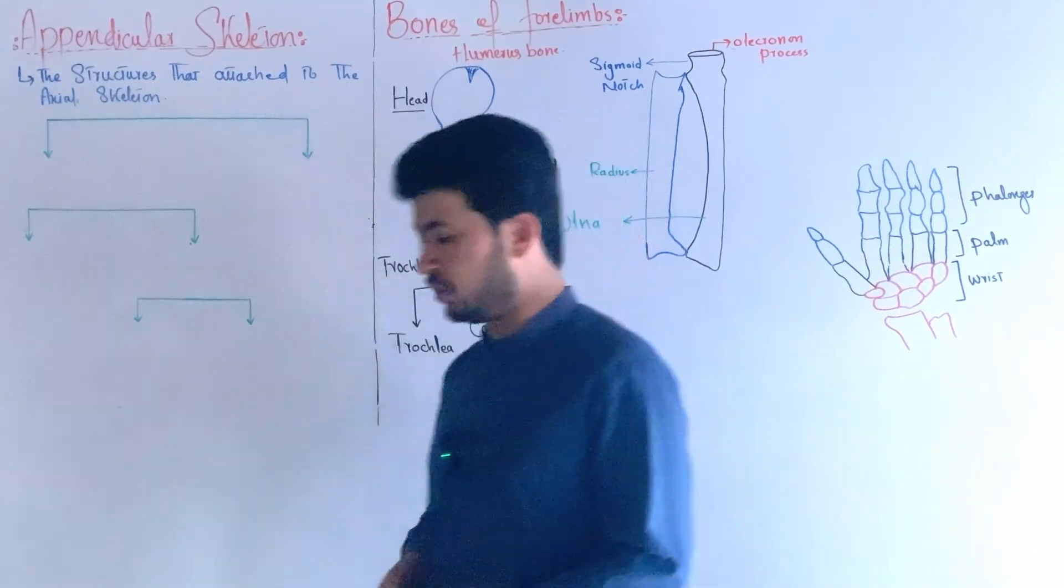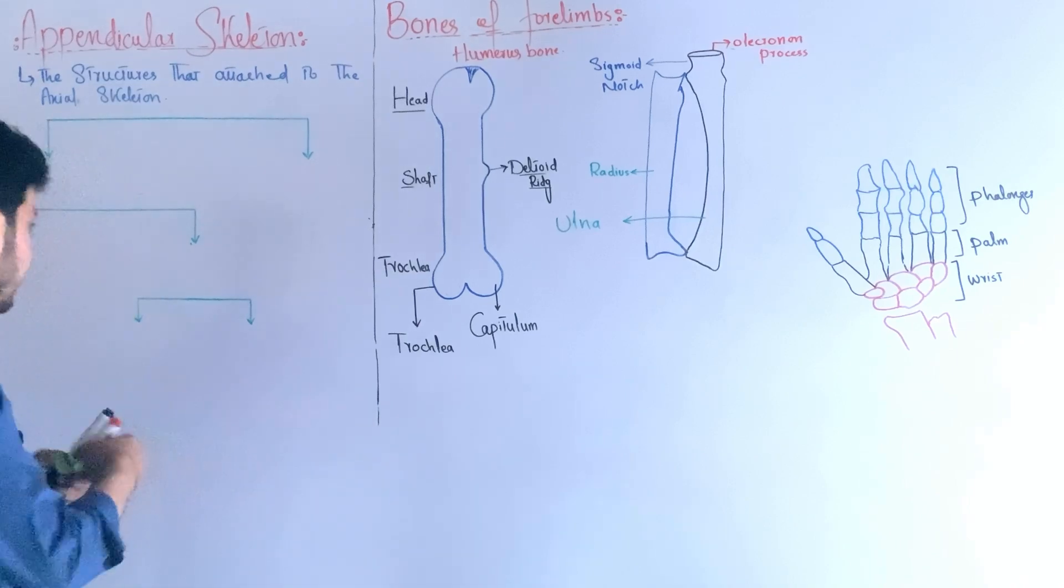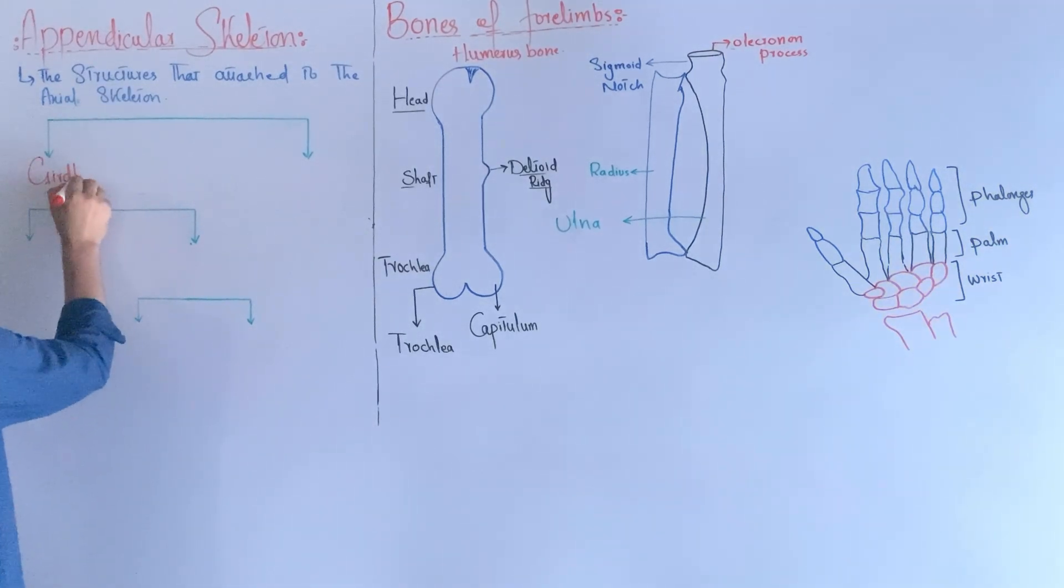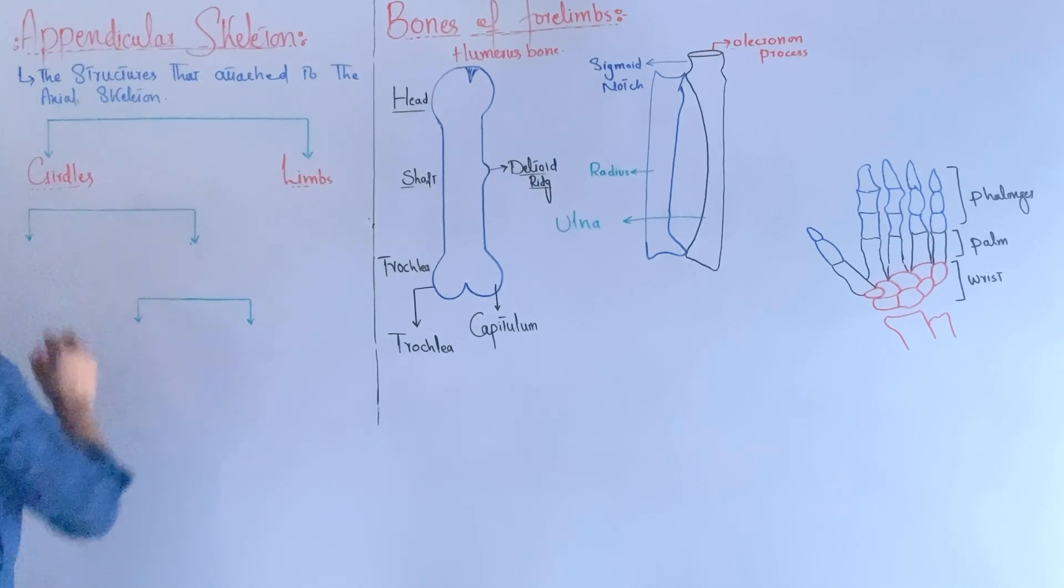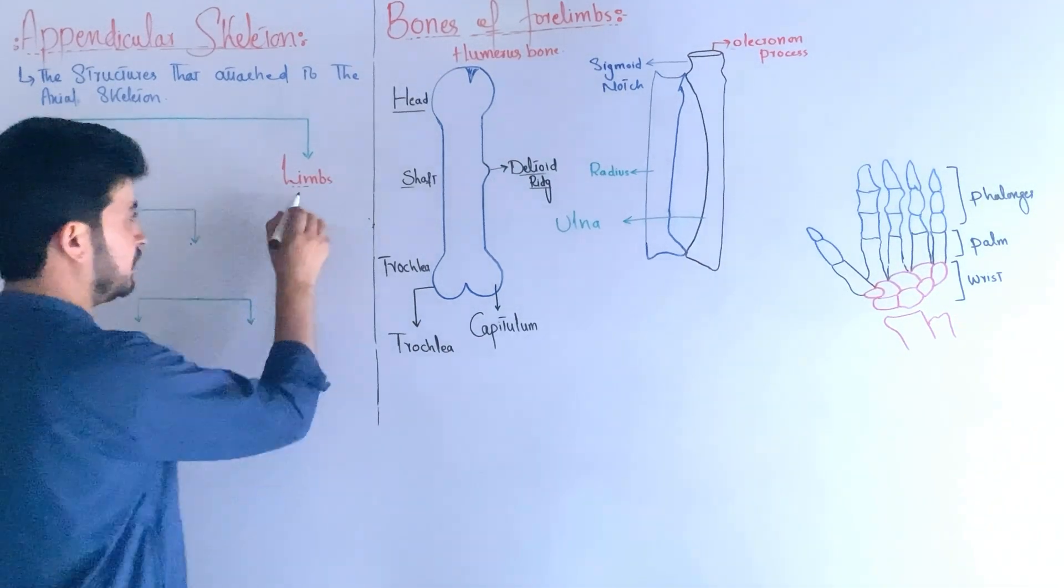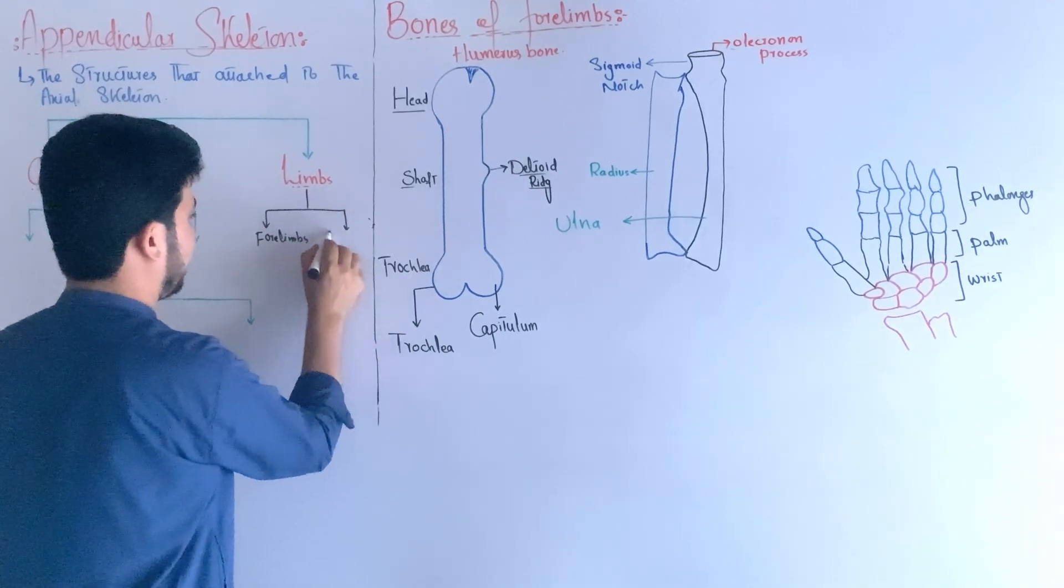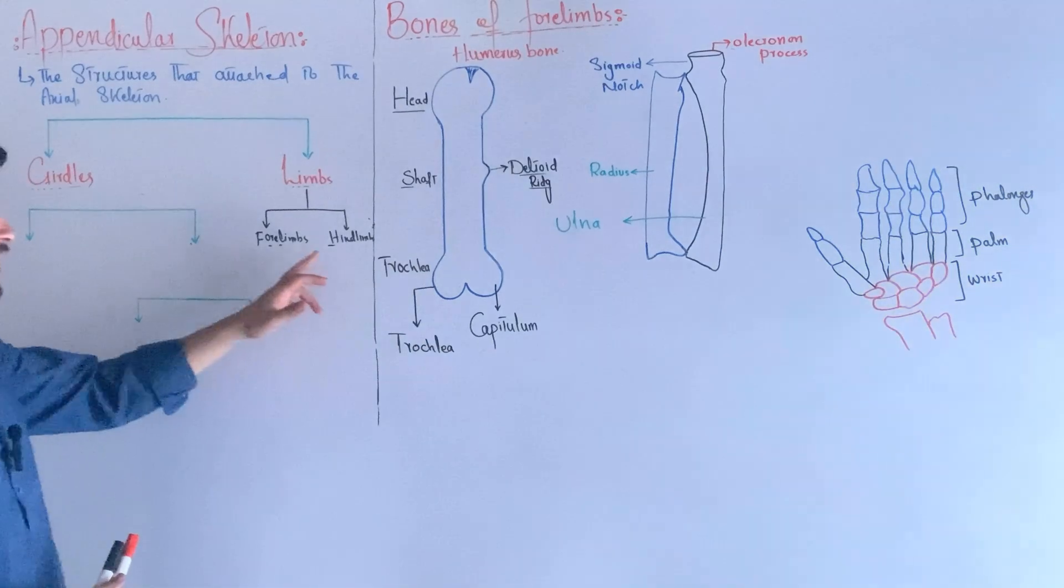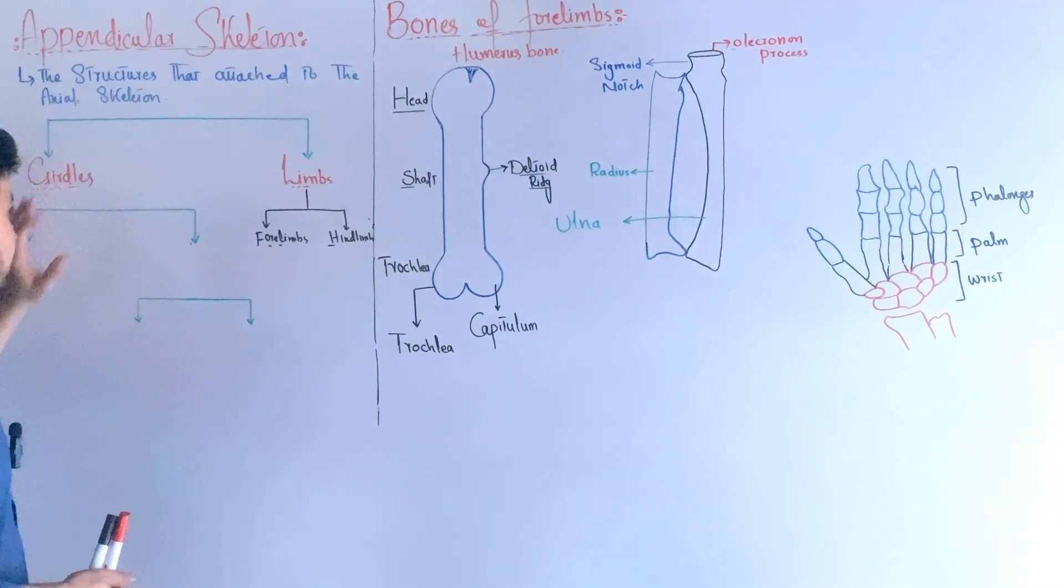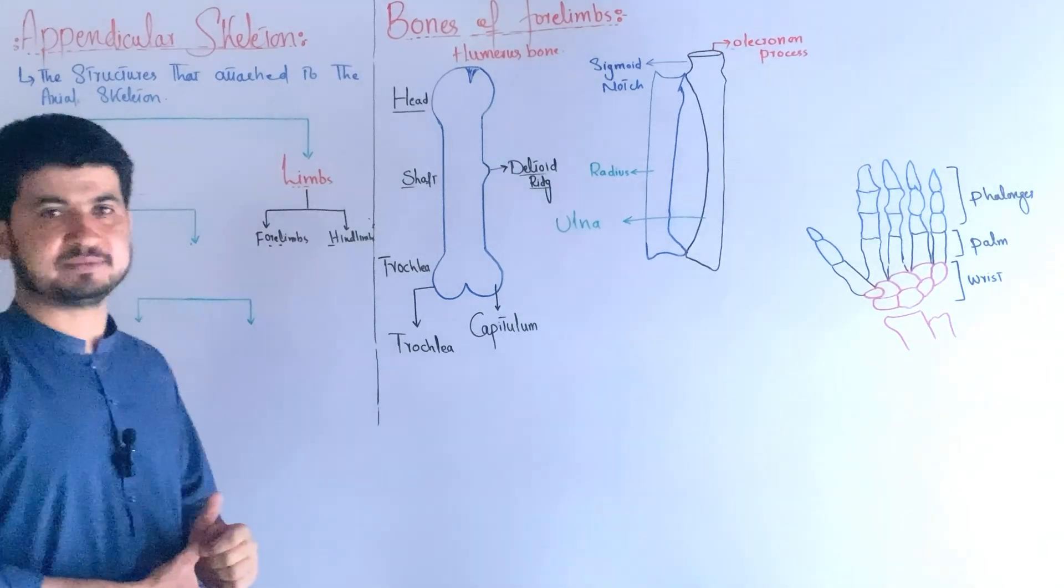The appendicular skeleton has two parts - the axial skeleton structures attaching to the limbs. The limbs are the forelimbs and hindlimbs. We will discuss the forelimbs and hindlimbs. The limbs are attached to the axial skeleton through specific structures.